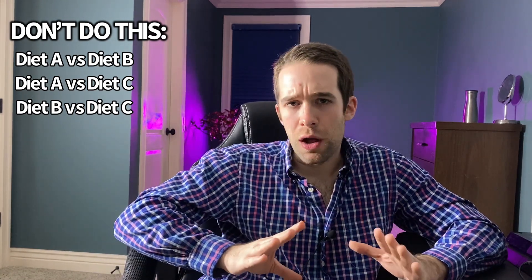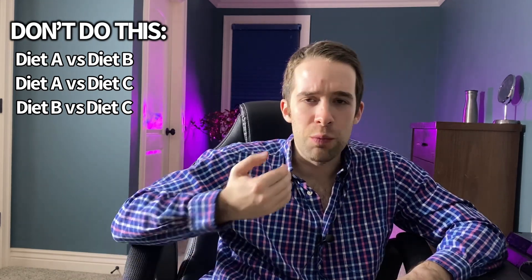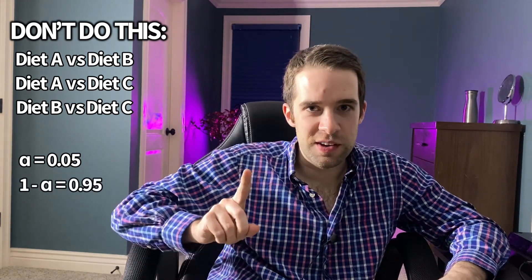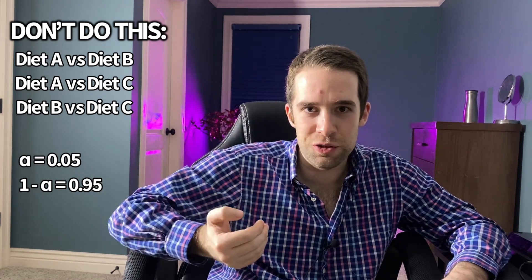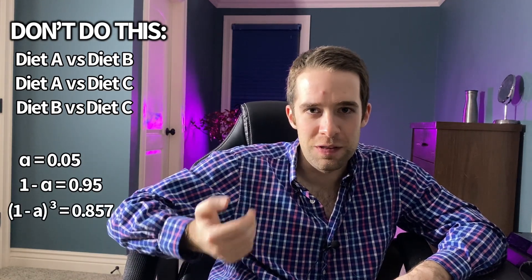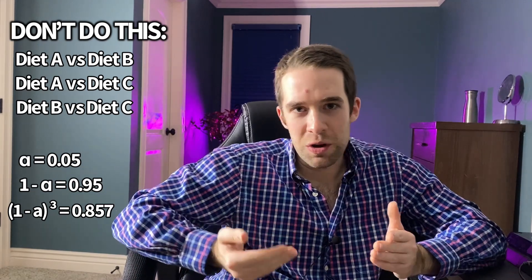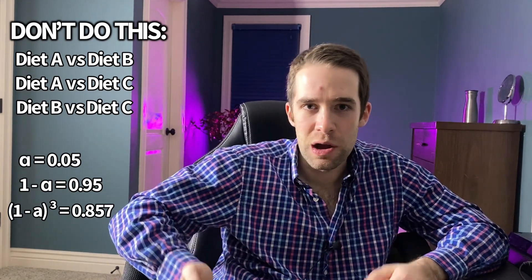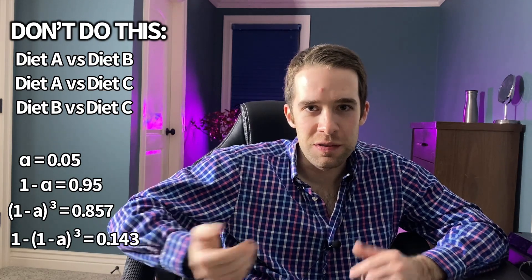Basically, let's assume the null hypothesis is true across the board and we're using a significance level of 0.05, so there's no difference whatsoever between any of these diets. Then if you look at any one single test, the probability that we don't make a type 1 error is 1 minus 0.05, or 0.95. If we're doing this three times, then the probability that we never make a type 1 error is 0.95 to the third, that is 0.857. So the probability that we make at least one type 1 error is 1 minus 0.857, that is 0.143. That's not ideal at all.